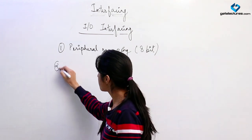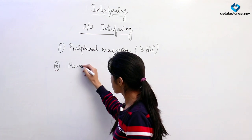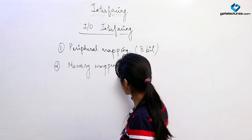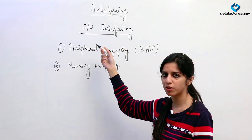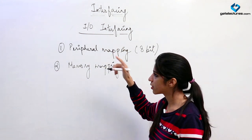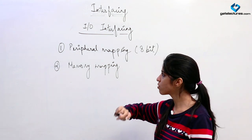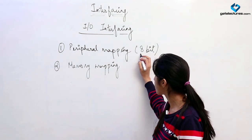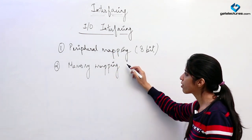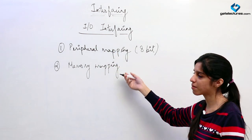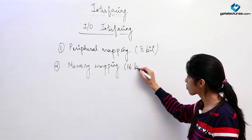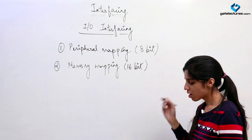The second type is memory mapping. In both these cases we are going to connect input-output devices only — we are not going to connect memory — but there are two ways of connecting input-output devices. One is to give their particular 8-bit address to the microprocessor; the other way is to give their 16-bit address just like memory, and they will be treated like memory locations. This is 16-bit mapping.